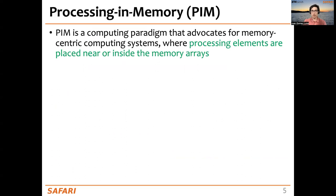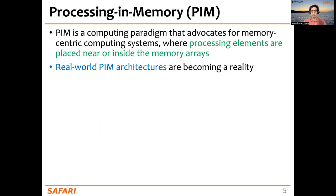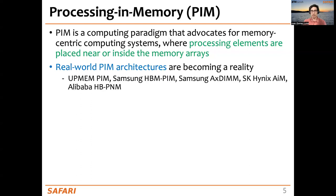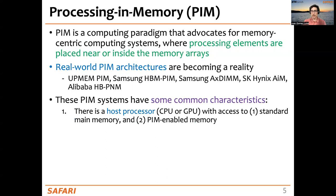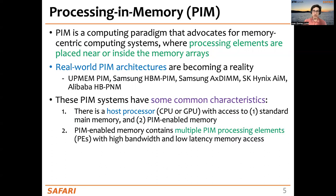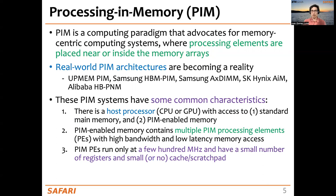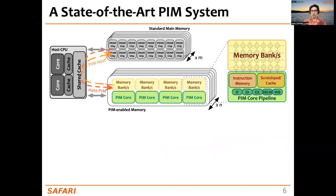Processing in memory systems is a computing paradigm that advocates for memory-centric computing systems where processing elements are placed near or inside the memory arrays. PIM is becoming a reality with UPMEM, Samsung HBM PIM, Samsung AXD, SK Hynix AiM, or Alibaba HVPNM, which we have covered in this course. These PIM systems share common characteristics: a host processor with access to standard main memory and PIM-enabled memory, where the PIM-enabled memory contains multiple PIM processing elements with high bandwidth and low latency memory access. You can identify the standard main memory, the PIM-enabled memory with memory banks, PIM cores, and the host processor in this picture of a state-of-the-art PIM system.